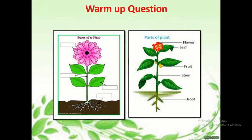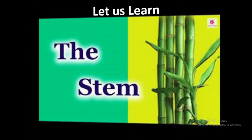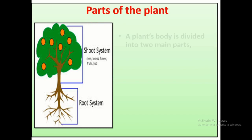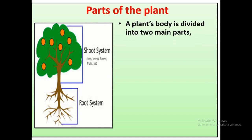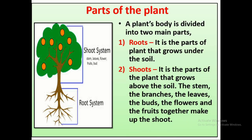We know that a plant is divided into many different parts: root, stem, fruit, leaf, and flower. A plant body is divided into two main parts. First is the shoot system and second is the root system. The root is the part of the plant that grows under the soil. The shoot is the part that grows above the soil, and it consists of the stem, branches, leaves, buds, flowers, and fruits.